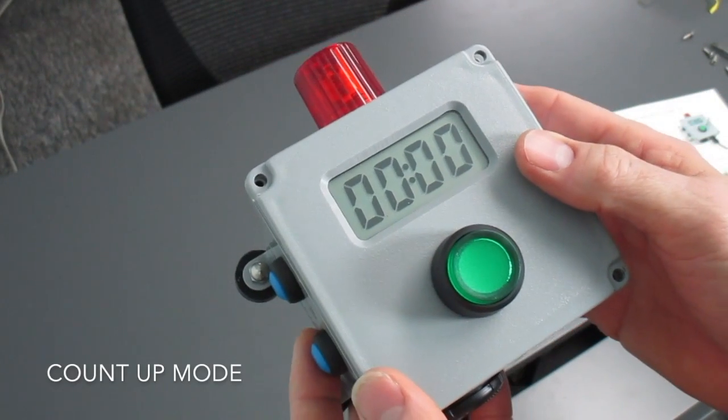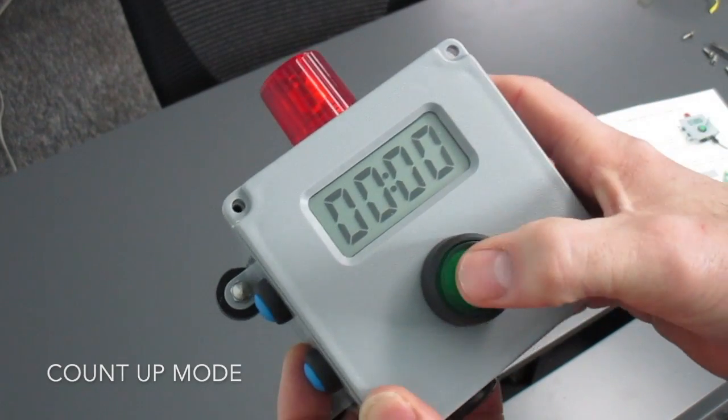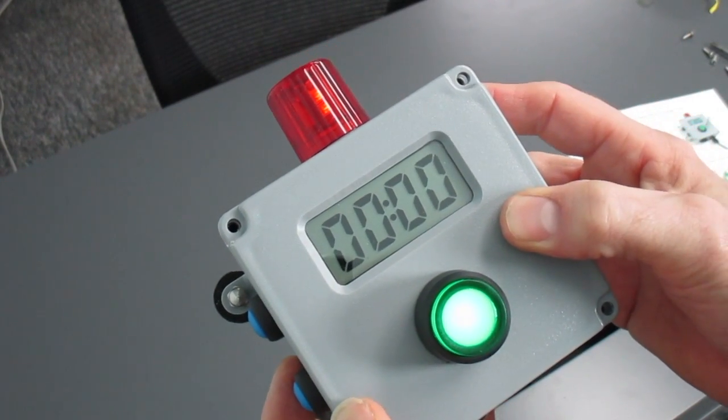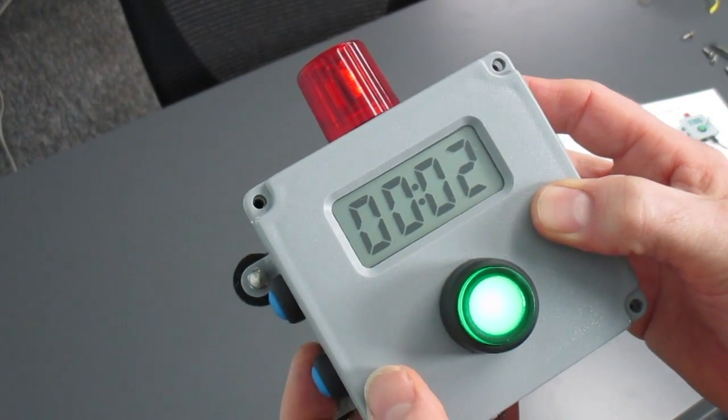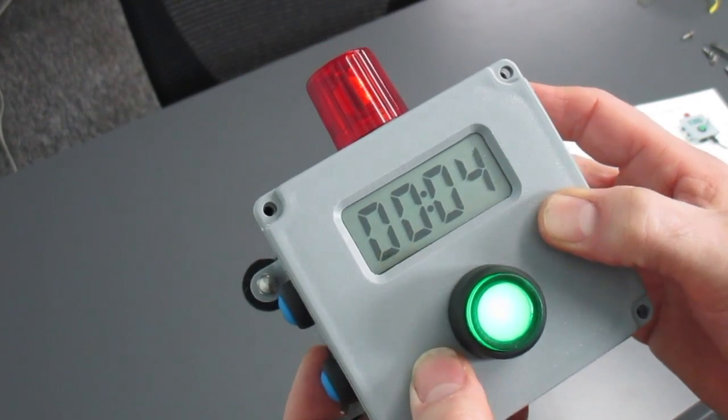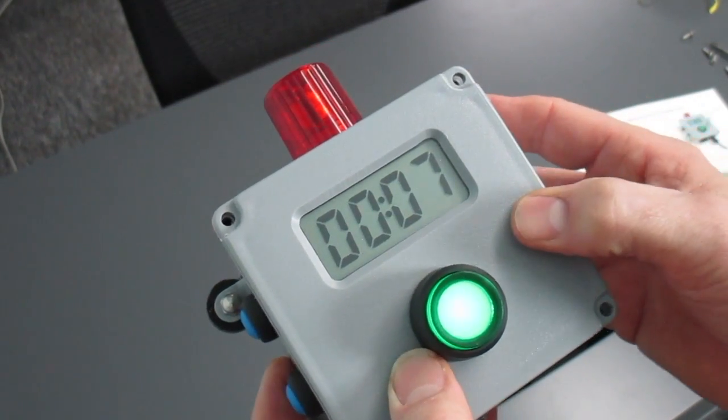If we start the time from zero then this timer will count up. So there it is at zero. We push the start button and it just counts up, just like a kitchen timer, until it reaches the maximum time which is 99 minutes.